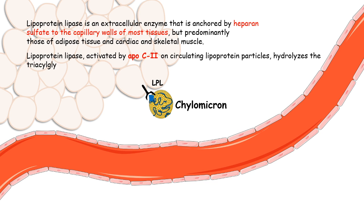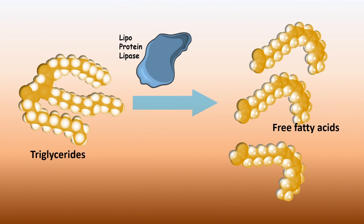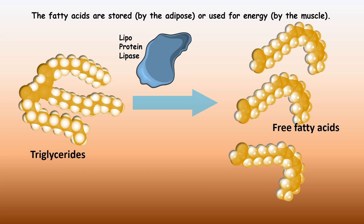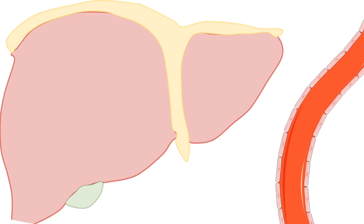The lipoprotein lipase, activated by apolipoprotein C2, breaks down triacylglycerol into free fatty acids, and these free fatty acids are stored inside the adipose tissues. So the major function of lipoprotein lipase is to break down triacylglycerol. As triglyceride concentration is reduced in the particle, it is now known as chylomicron remnant, and it would be taken up by the liver.